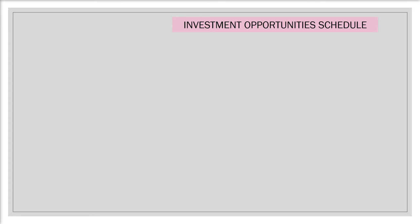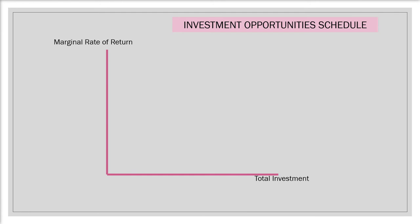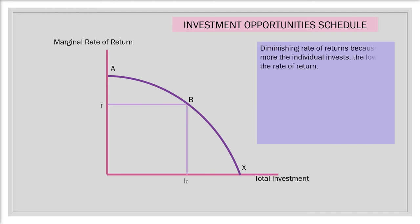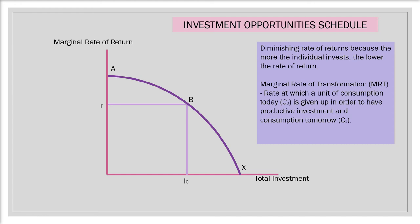Now let's look at the investment opportunity schedule. On the y-axis we have the marginal rate of return from investments, and on the x-axis we have the total investment. Curve A-B-X represents the investment opportunity schedule. At point B, the marginal rate of return is R and the total investment made is I0. We can see that there are diminishing returns — when the individual invests more, the rate of return decreases. The slope of the investment opportunity schedule is the marginal rate of transformation, MRT, which is the rate at which a unit of consumption today, C0, is given up in order to have productive investment and consumption tomorrow, C1. MRT is the rate of return.